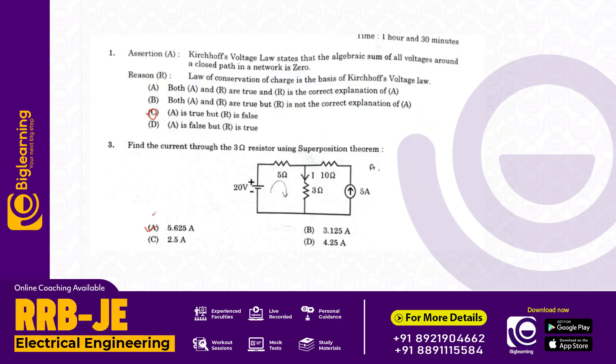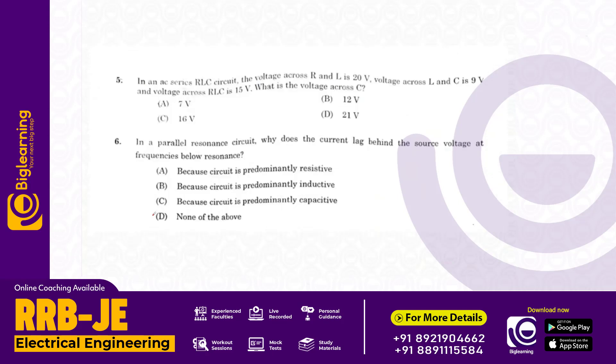In an AC series RLC circuit, the voltage across R and L is 20 volts, voltage across L and C is 9 volts, and the voltage across RLC is 15 volts. What is the voltage across C?